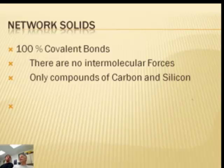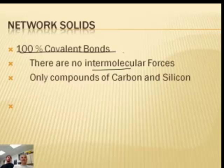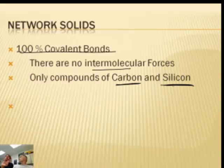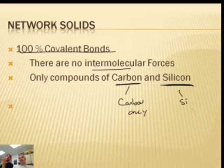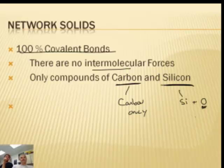One more thing to cover is network solids. In a network solid, this is a substance that does not have intermolecular forces — none of them. It's all covalent bonds, 100% covalent bonds. These only happen with compounds of carbon and silicon. We need to be careful: it's not any compound with carbon in it. It's a compound of pure carbon only. And with silicon, it's usually silicon and oxygen, though you can do it with other things too. Carbon has to be carbon only — not carbon and hydrogen.